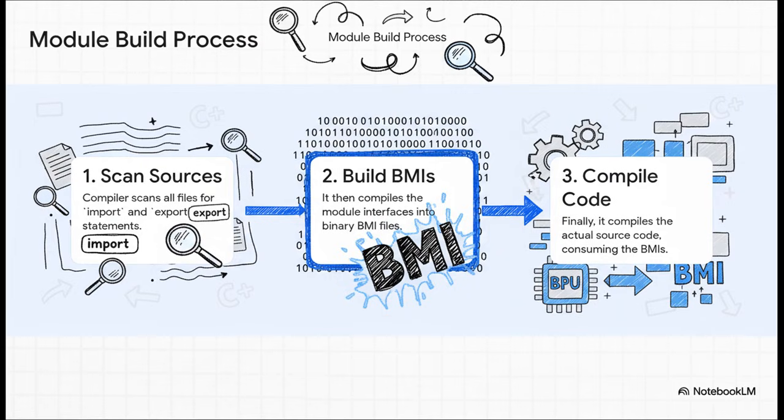So how do you solve that? While modern build systems came up with this clever new three-step dance. Step one, the toolchain does a super fast scan of all your source files, and it's looking for only two things, the import and export keywords. Step two, now that it has a map of all the dependencies, it compiles only the module interfaces into those binary BMI files. And then finally, step three, it compiles your actual code, and as it goes, it just feeds in the pre-built BMIs that it needs. Problem solved.